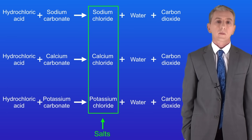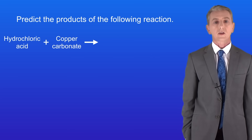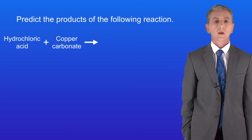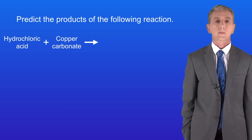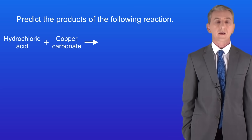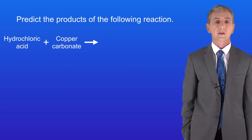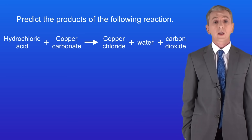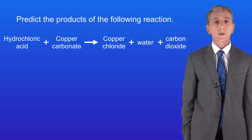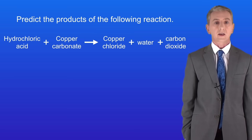Here's a sample question: predict the products of the reaction between hydrochloric acid and copper carbonate. Pause the video now and try this yourself. The metal ion in this case is the copper ion in the copper carbonate. We're reacting this with hydrochloric acid, so the salt is going to be copper chloride. Because we're starting with a metal carbonate we're also going to make water and carbon dioxide gas.